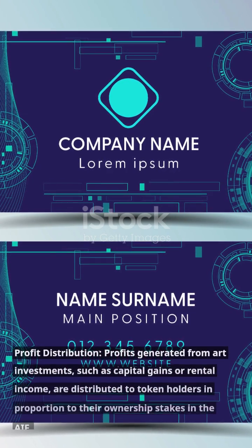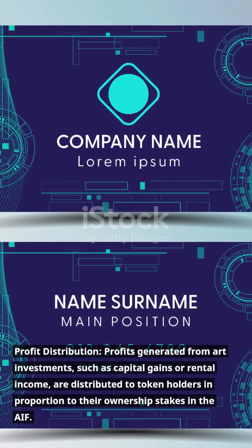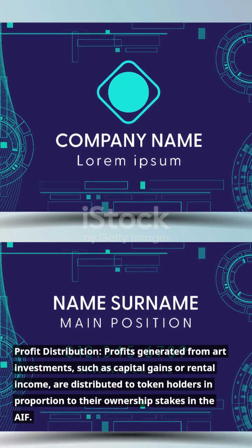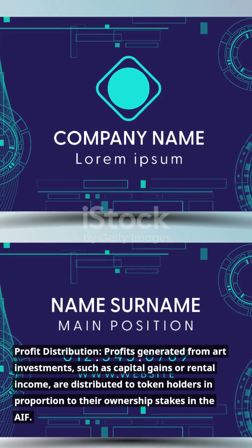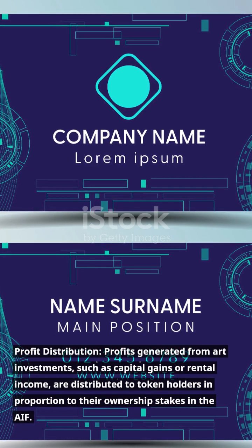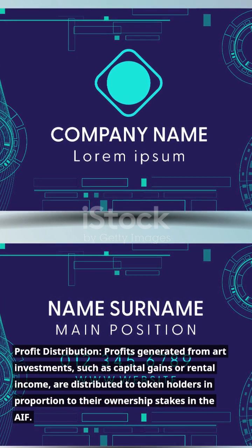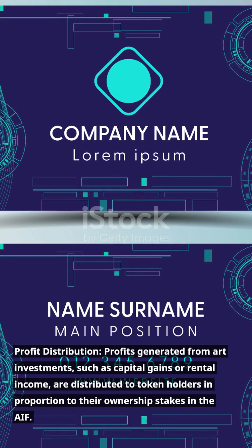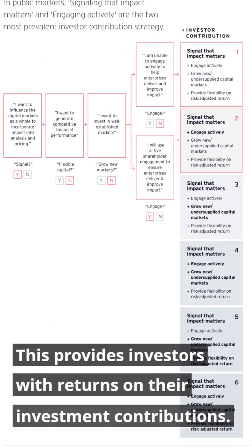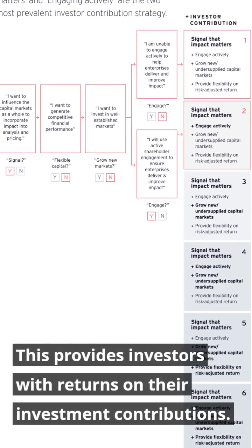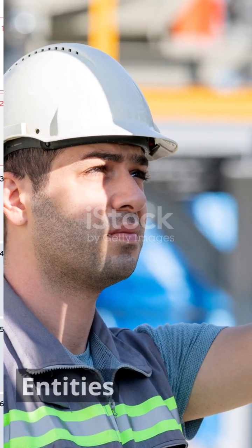Profit Distribution: Profits generated from art investments, such as capital gains or rental income, are distributed to token holders in proportion to their ownership stakes in the AIF. This provides investors with returns on their investment contributions.